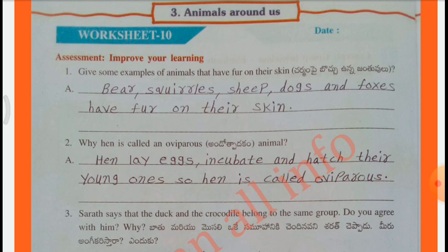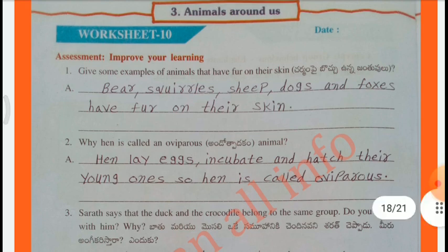Why is hen called an oviparous animal? Hen lays eggs, incubates and hatches their young ones. So hen is called oviparous.